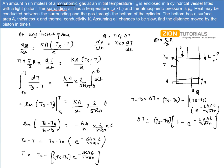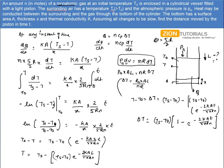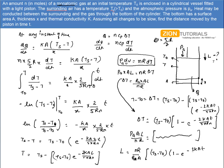Since the external pressure is constant and equal to Pa, we can write PA·ΔV = NR·ΔT. If the piston moves down by length L, the change in volume is A·L. So PA·AL = NR·ΔT, giving ΔT = PA·AL/(NR). Substituting the expression for ΔT, we get L = NR/(PA) times (Ts - T0) times [1 - e to the power of minus 2KAt/(5RN)]. That is the final answer.